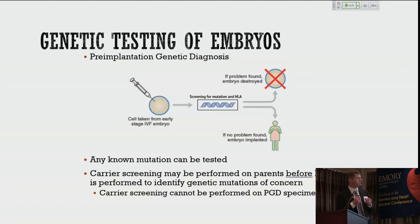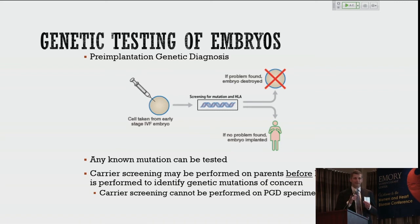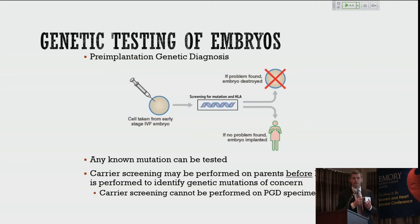Once we have those cells, we can screen them to see two things: one, does the embryo have normal chromosomes, and two, does it carry a disease of concern? We can screen for pretty much any known single gene mutation, but we have to know it's there — we don't have the technology to screen an embryo for anything; we have to know the parent carries it first. If an embryo is chromosomally aneuploid or carries the disease of concern, it's not transferred. If no problem is identified — euploid embryo, no disease — it can be transferred back to the woman or to a gestational carrier.